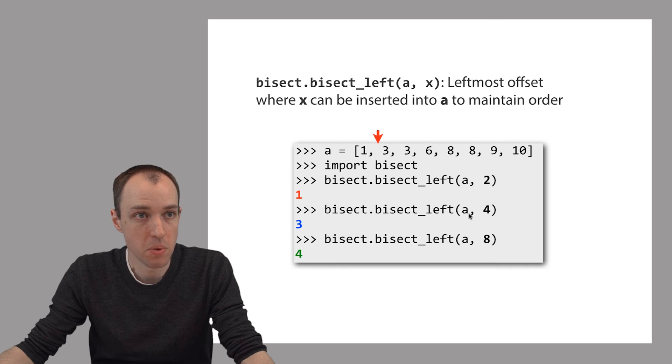Here, we're calling bisect_left with the parameters a and 4. Bisect_left, in this case, returns the offset 3. That means if we wanted to stick 4 in this list, we would do it between here and here. So we'd do it between the 3 and the 6.